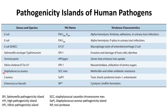Another example is Staphylococcus aureus, which has the SCC — Staphylococcal cassette chromosome mec — which is responsible for methicillin resistance and other antibiotic resistance. Staphylococcus aureus is also known to have another pathogenicity island, SAPI1, that is Staphylococcus aureus pathogenicity island 1, which has the virulence trait toxic shock syndrome toxin 1 and enterotoxin, responsible for toxic shock syndrome-like manifestations.